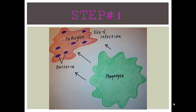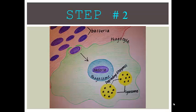The first step in phagocytosis is when the phagocyte moves to the area of infection by a pathogen in the body. Step 2 is when the phagocyte engulfs the bacteria from the pathogen into its own cell by a vacuole called a phagosome. Also in the phagocyte, there are lysosomes containing degrading enzymes.